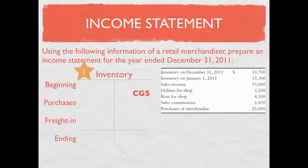They give us beginning inventory as of January 1st, 2011 — you need to watch your dates, since December 31st would be the end of the year — so beginning inventory is $15,300. Purchases of merchandise were $25,000. No freight in is listed, so I assume it's zero. Ending inventory is $10,700. Taking all the debits and subtracting the ending inventory gives us cost of goods sold of $29,600.